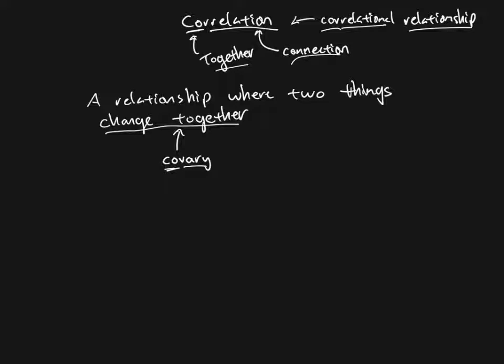So it's a relationship where two things change together in a consistent, a consistent way. So what we mean by a consistent way is that if we have two different variables, let's say we have variables X and Y, as X changes, Y also changes.